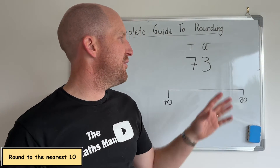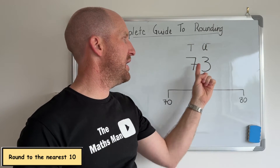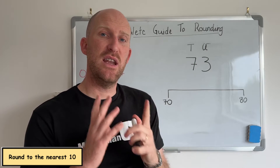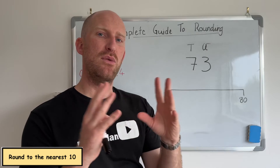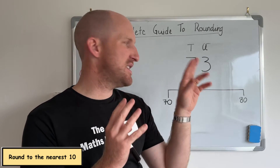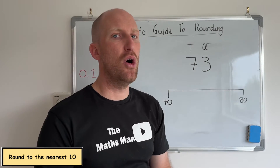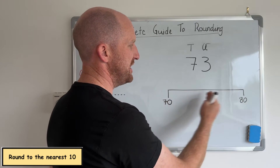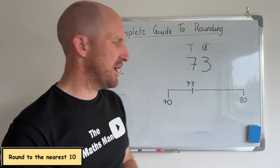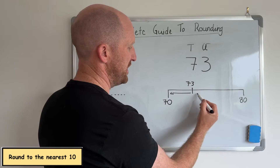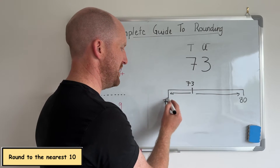In this first example we are going to be rounding 73 to the nearest 10. The number 73 has 7 in the tens column and 3 in the units column. Because we're rounding to the nearest 10, the important number is in the tens column. That means the answer is either going to stay at 70 or round up to 80. On a number line from 70 to 80, we can clearly see that 73 is closer to 70 than it is to 80, so the answer would be 70.